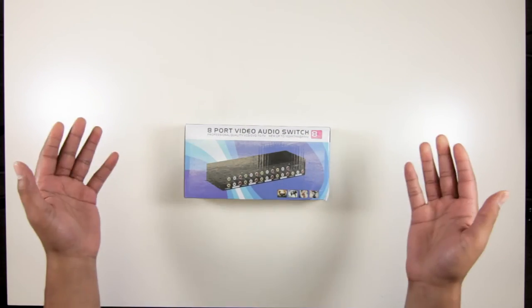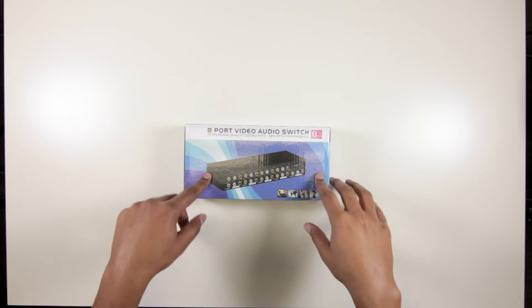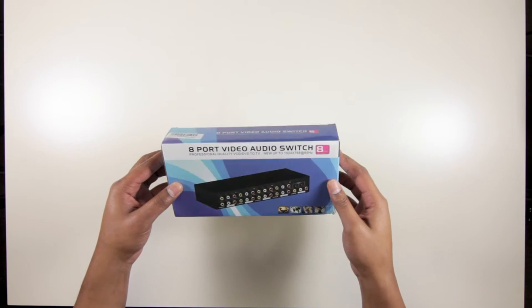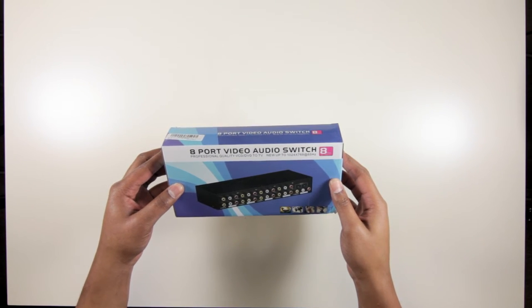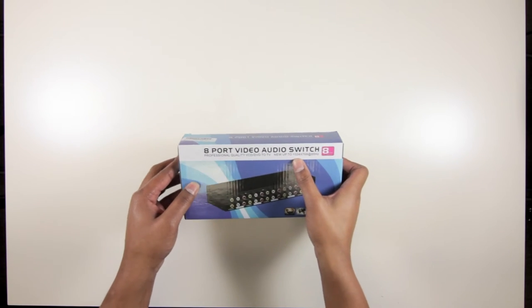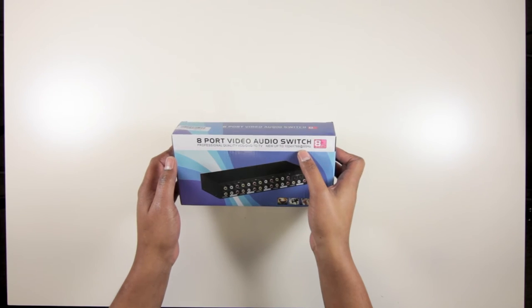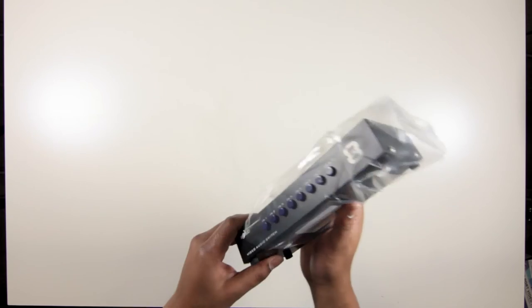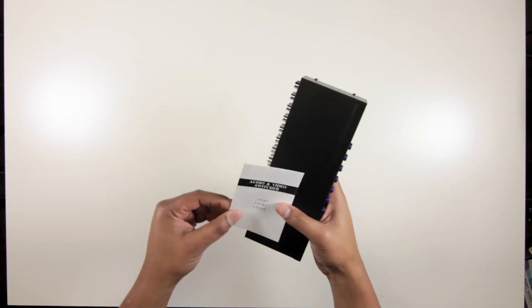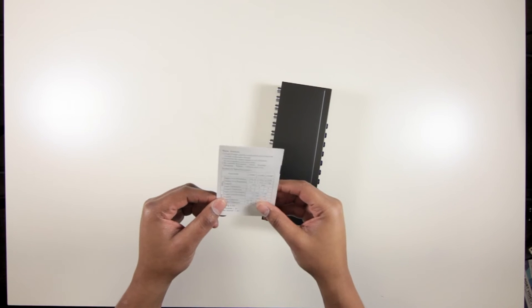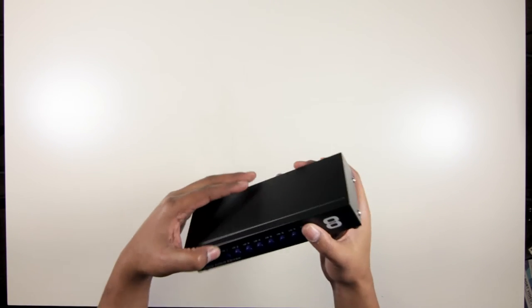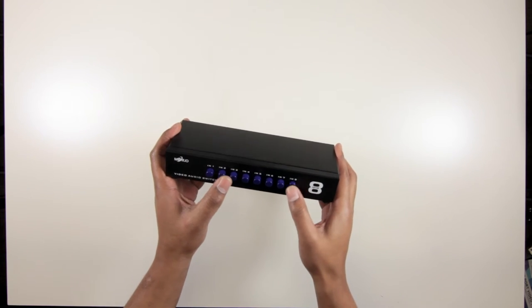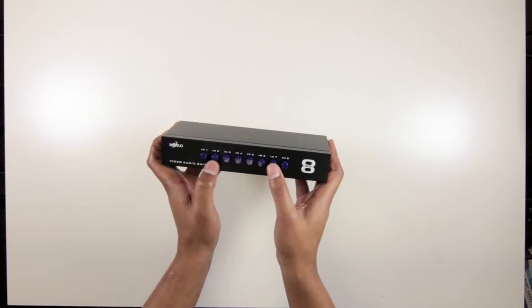I really only want to have one input, but if we want to have all the retro consoles hooked up, maybe next to their older younger brothers, then we can do that. Most of those consoles can use some form of RCA or component, and this is just an 8-port video/audio switch. It can output up to 1024 by 768 at 85 Hertz. Let's take a look at this - very minimal packaging.